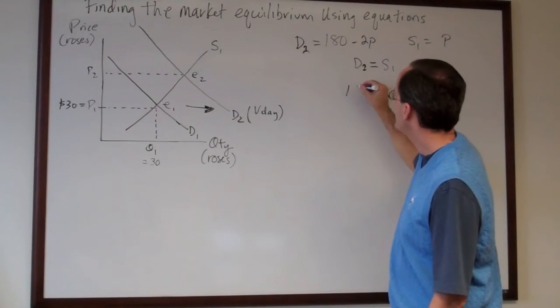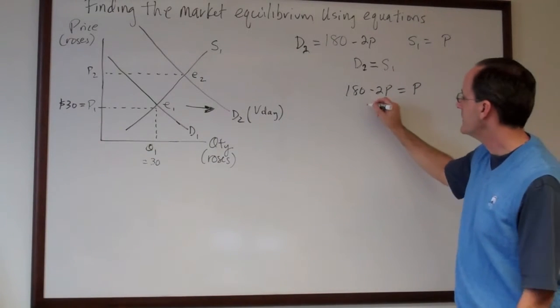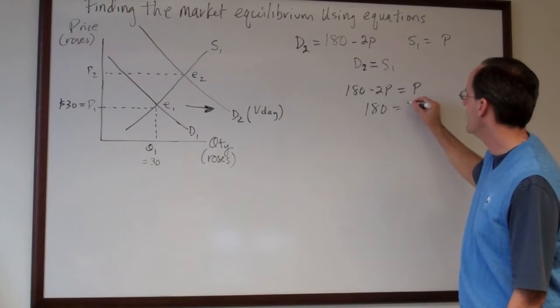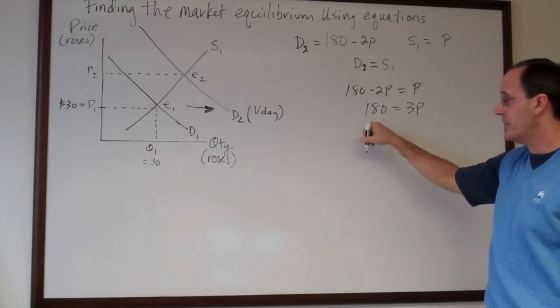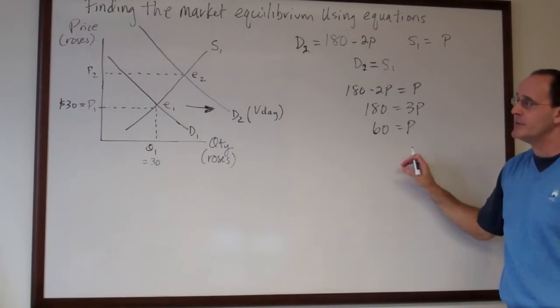And we'll set 180 minus 2p is equal to p. We'll collect terms like we did before. We'll divide by 3 and we'll get the price is equal to 60.